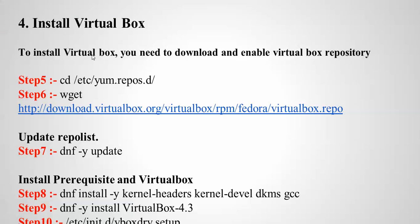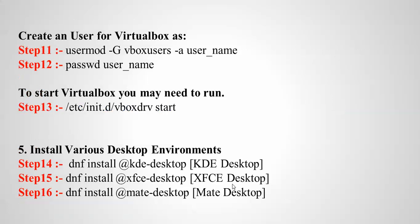Now, installing VirtualBox. To install VirtualBox, first we need to go to yum-virtualbox repository. In the repository, we need to add and download the required files, then update, and then follow the procedure to install VirtualBox step by step. Then we create a user and password, and start the virtual machine.